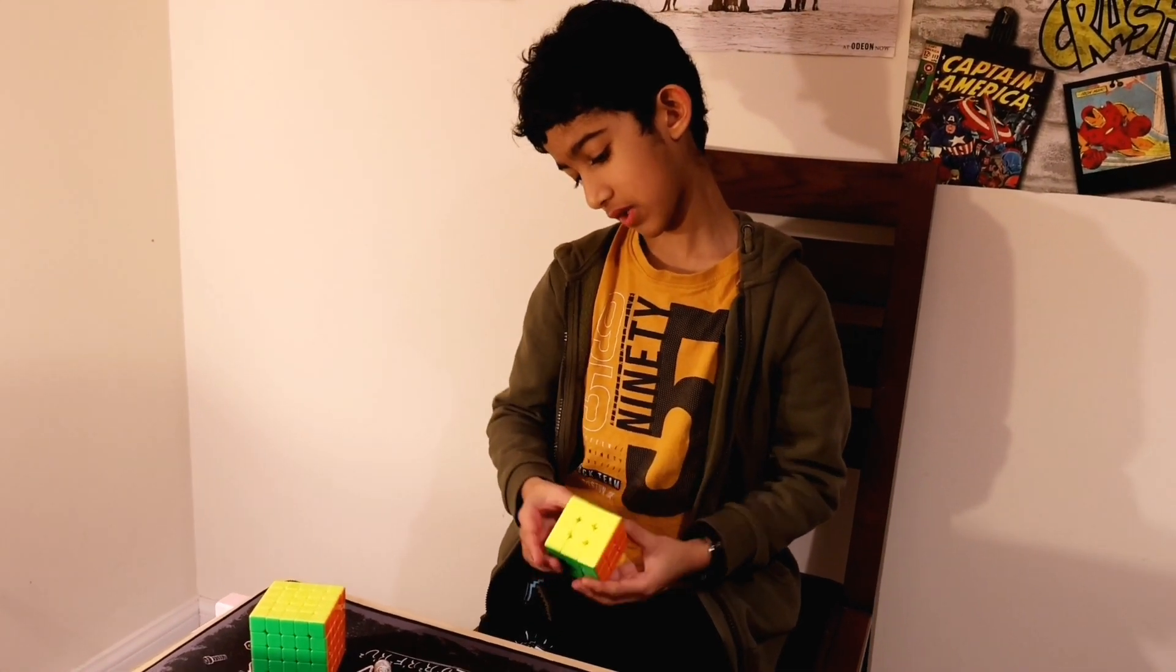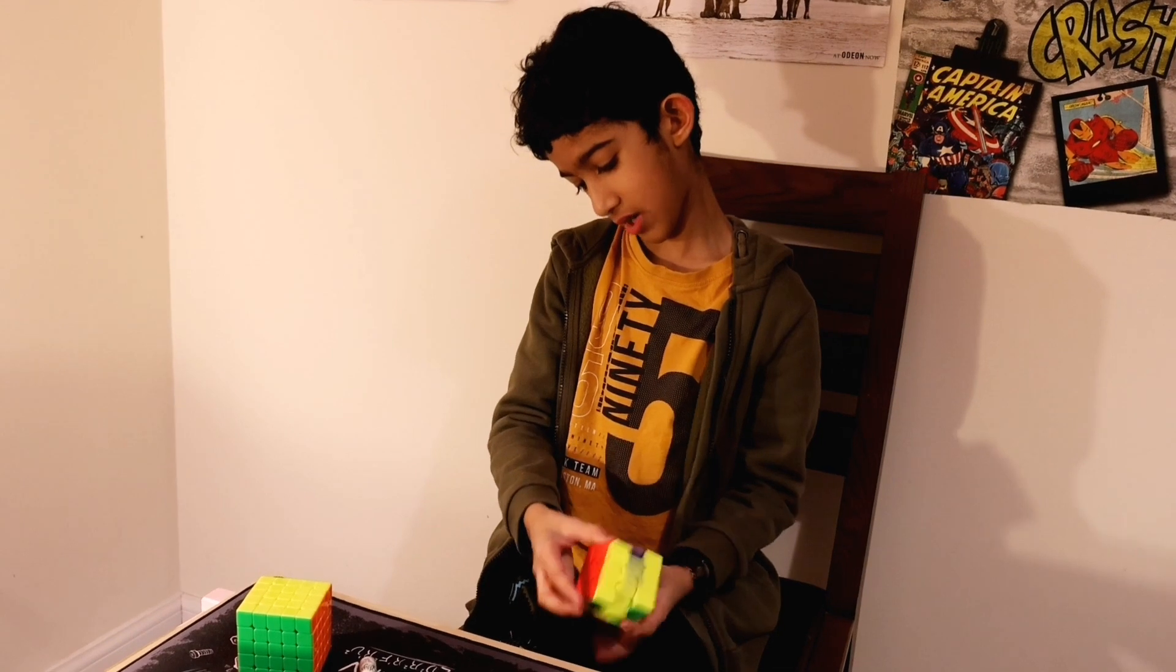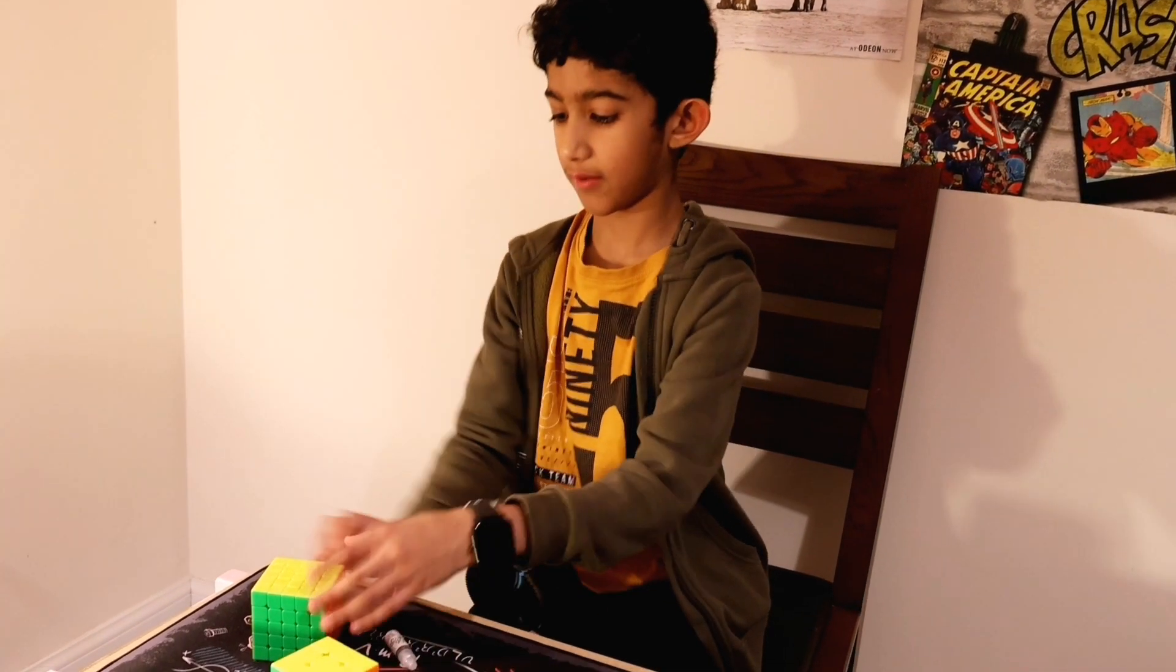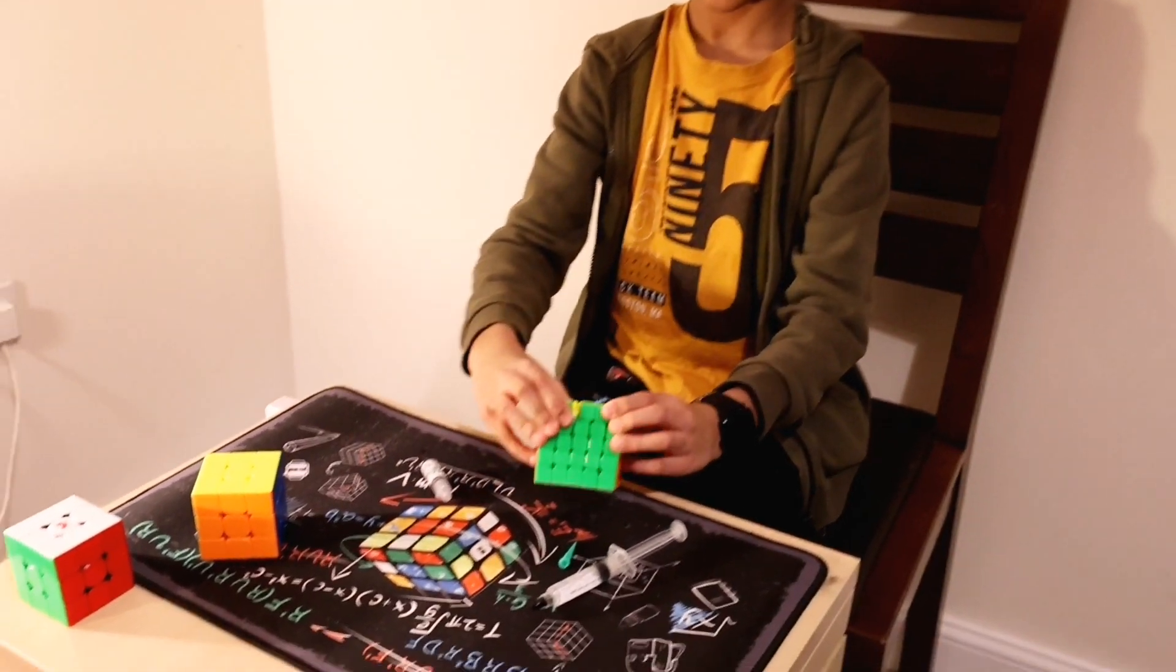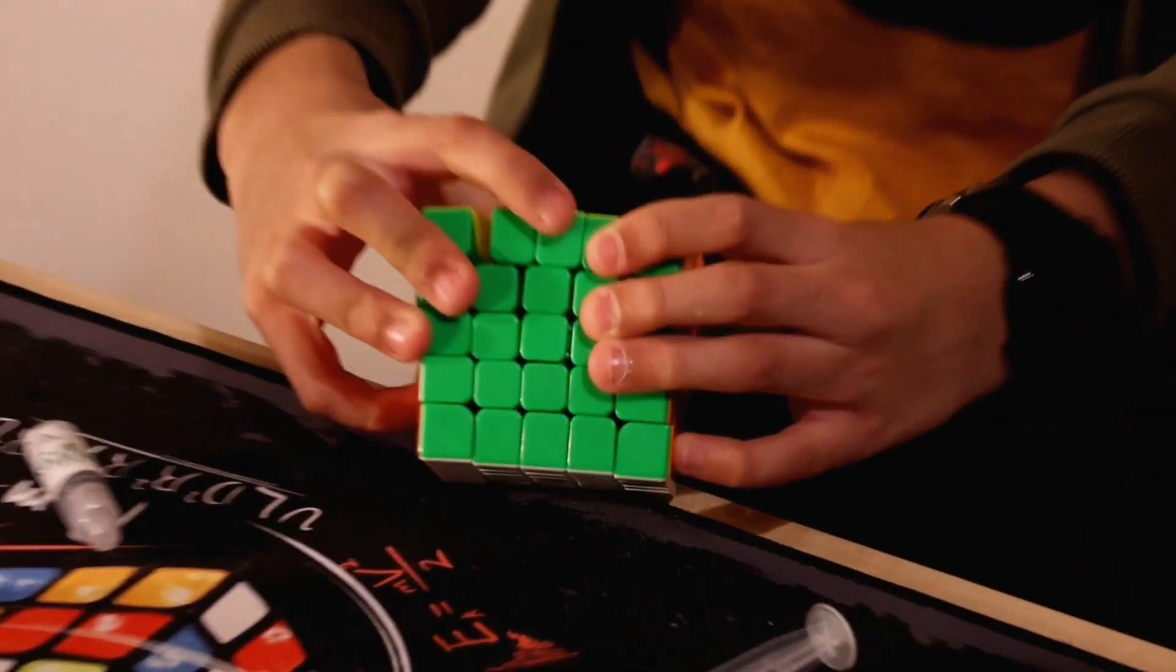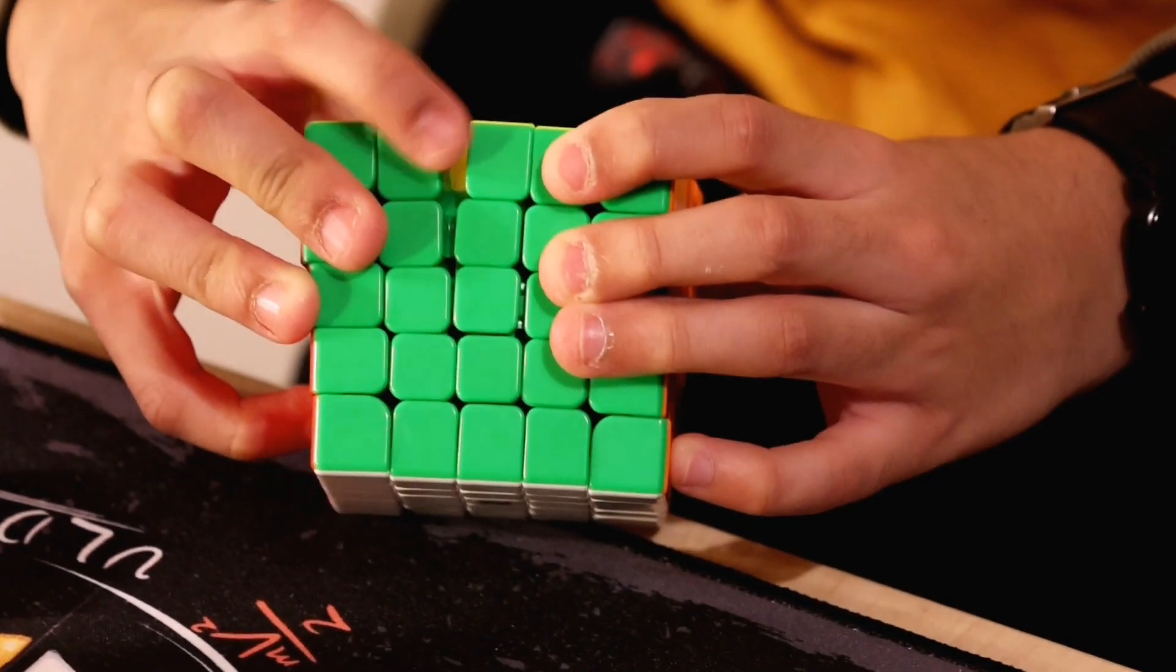As I explained in my unboxing video, it's quite sandy straight out of the box. Now for the 5x5, the Valk 5M, I won't really scramble it up as it takes a long time to solve.